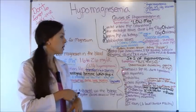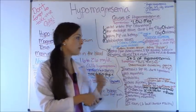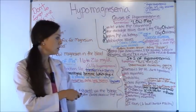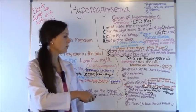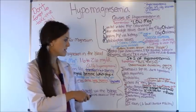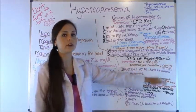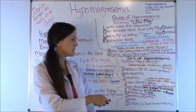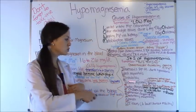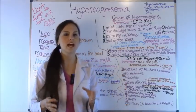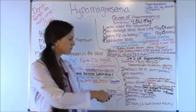T is for positive Trousseau's sign — as discussed in the calcium videos, you'll see that with hypomagnesemia because the patient also has low calcium levels. W is for weak respirations. I is for irritable — they will not be happy at all. T is for torsades de pointes, which is very important. This is a lethal abnormal heart rhythm — if a patient goes into it, they'll go into cardiac arrest and you need to start CPR. This is classically seen in patients with alcohol abuse. If a patient comes in with alcohol history and goes into torsades, as a nurse you will check the magnesium level, because low magnesium is normally what's causing that.